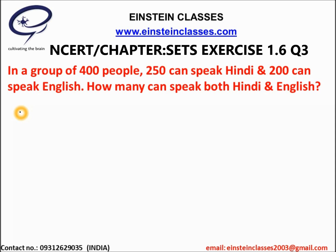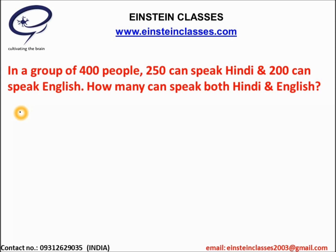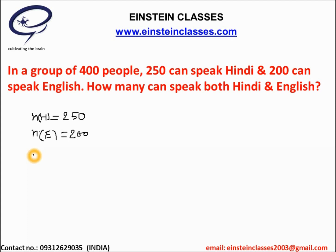Now consider a set H which contains the people who can speak Hindi, and the number of people will be equal to 250. Consider another set E where those people are there who are speaking English, and the number of elements in set E will be equal to 200. There are 400 people total — some are speaking Hindi, some are speaking English, and some can speak both languages. The total number of people who can speak Hindi or English is 400, meaning the number of elements in H union E equals 400.